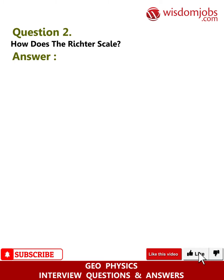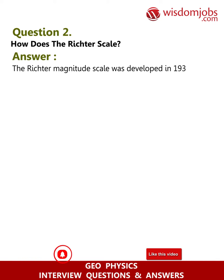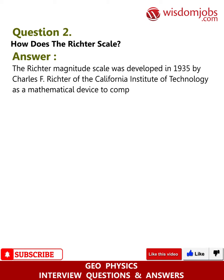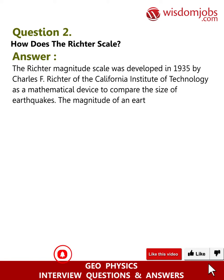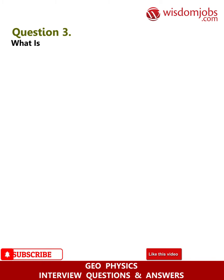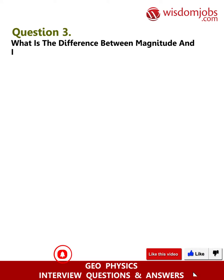Question 2: How does the Richter scale work? Answer: The Richter magnitude scale was developed in 1935 by Charles F. Richter of the California Institute of Technology as a mathematical device to compare the size of earthquakes. The magnitude is determined from the logarithm of the amplitude of waves recorded by seismographs.